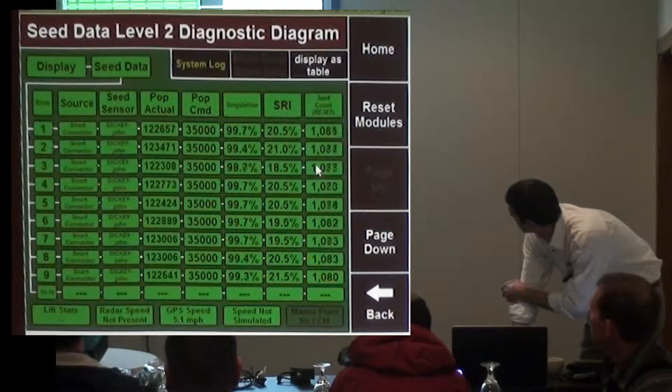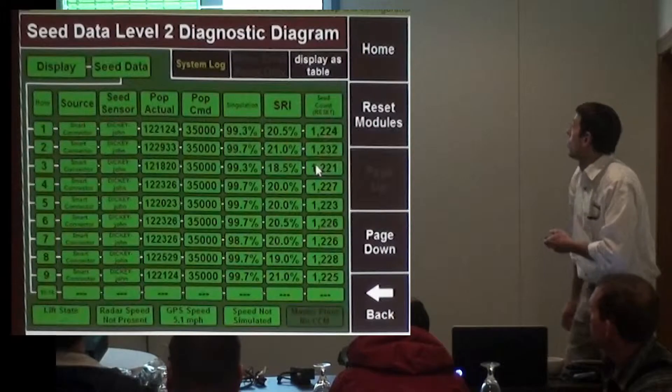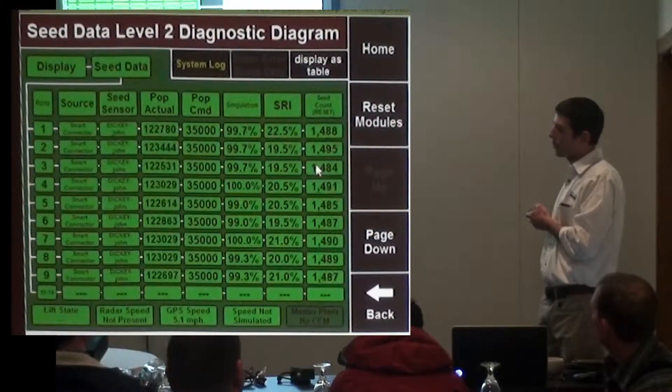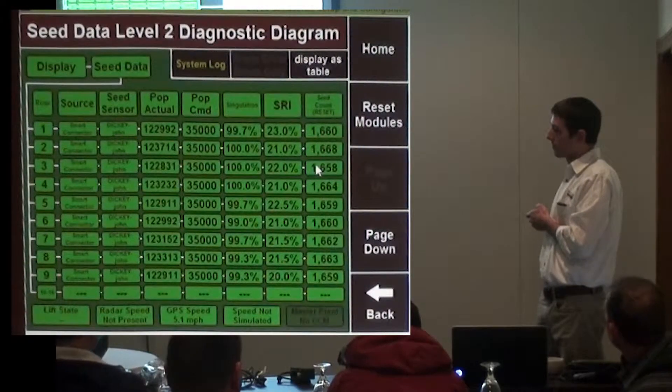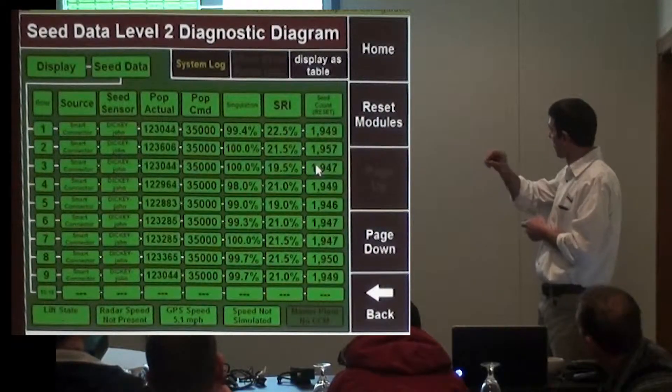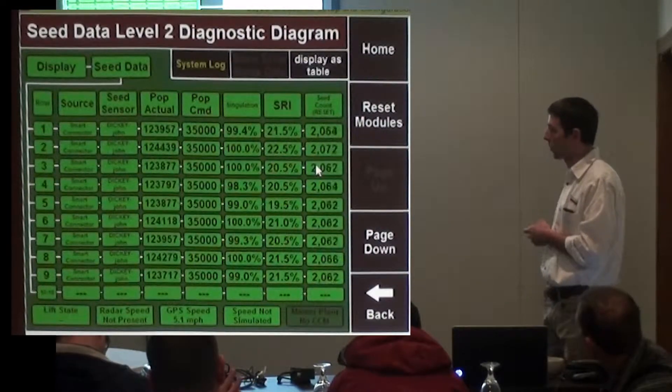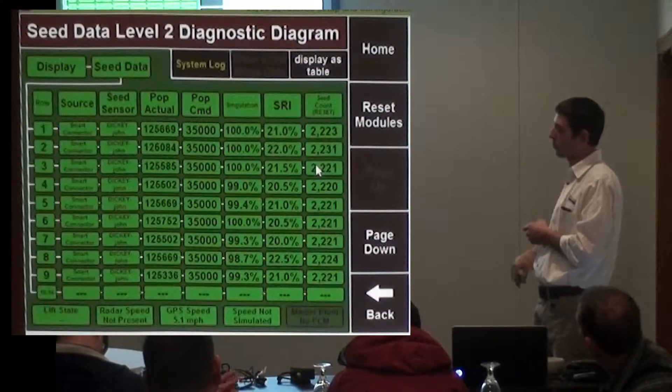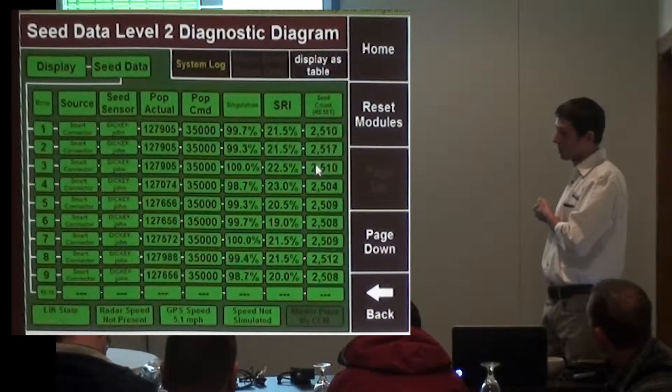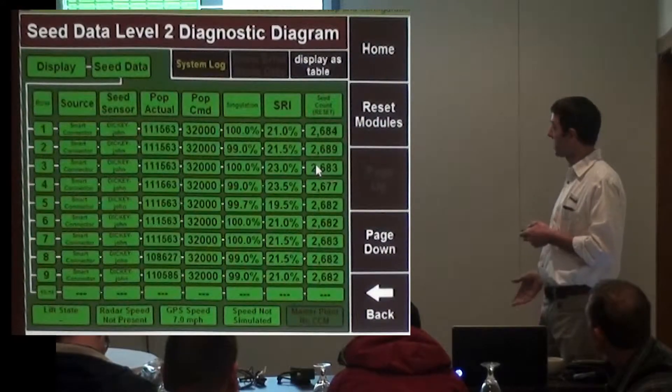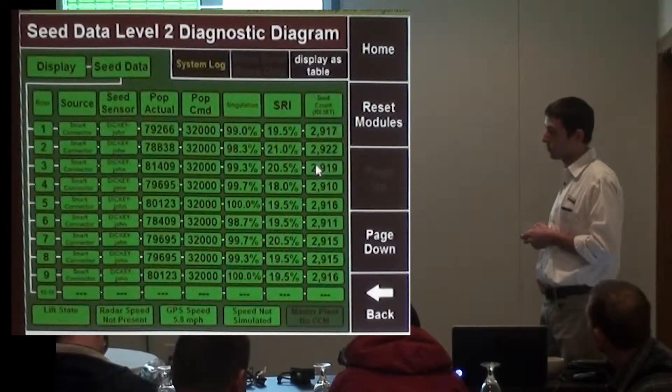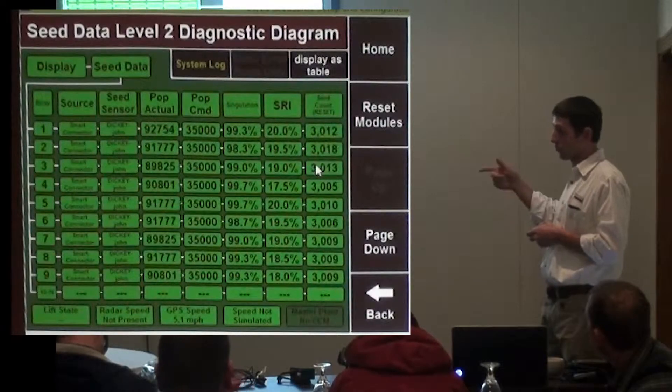One area you might use this is in the software now that got built in. If it thinks you're planting in dusty conditions, you'll get a little pop-up, a stationary pop-up on the home screen that says dusty conditions. What that means is the system thinks it's pretty dusty because if dust gets thick enough in your seed tubes, anything that'll break that light beam...